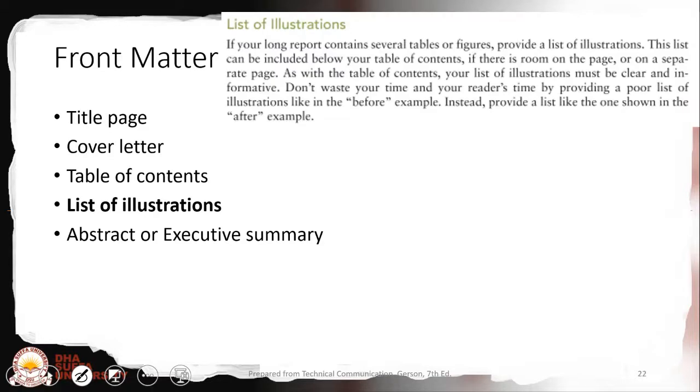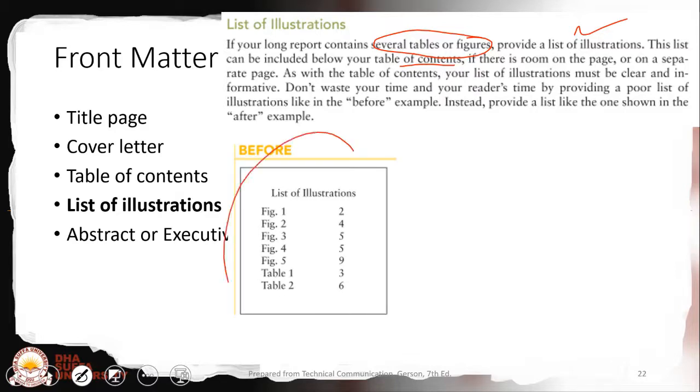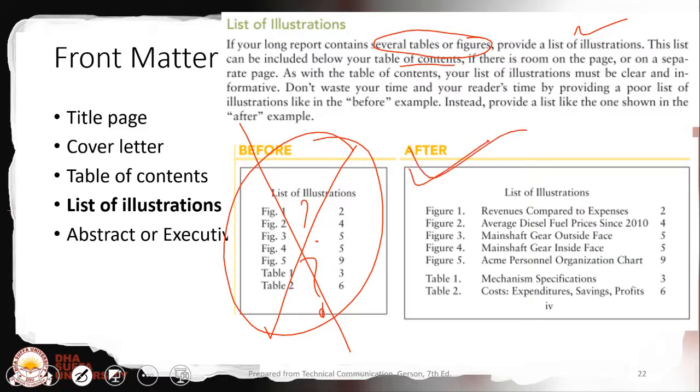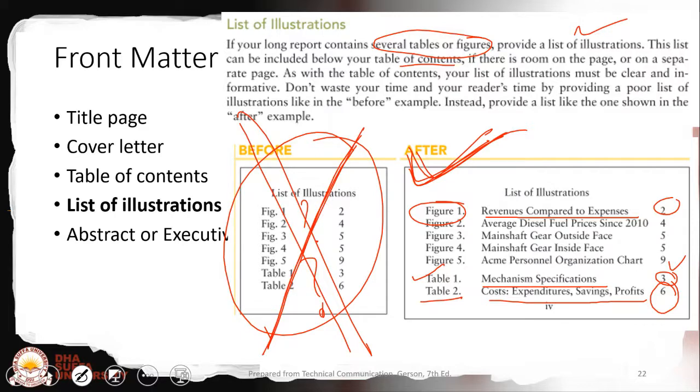List of illustrations: if your long report contains several tables or figures, it is needed to provide the list of illustration. This list can be included below your table of contents if there is room or on a separate next page. This is not a good one because figure one, what is it talking about? A better one will be that you specify figure one is revenues compared to expenses on page two, table one is mechanism specification on three, table two is cost, expenditure, savings, profit. This is a smart way to put the list of illustrations.